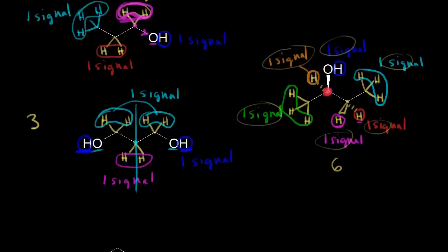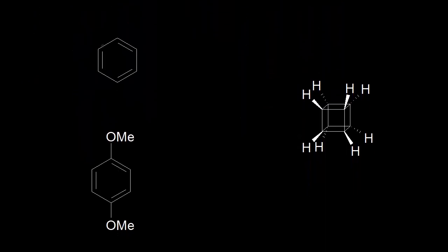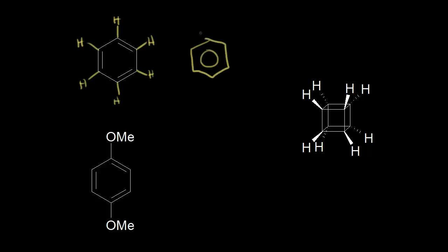Let's move on to a benzene ring. Benzene has six protons, and those six protons are all in the exact same environment — they're all chemically equivalent. Drawing a circle in the ring helps you see that symmetry. All six protons are in the same environment, so we would expect only one signal for benzene on an NMR spectrum.